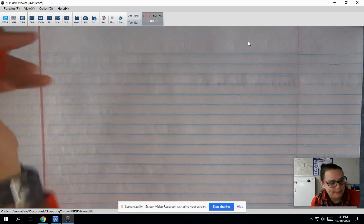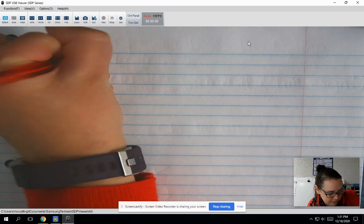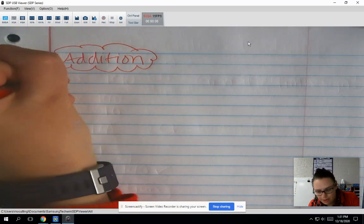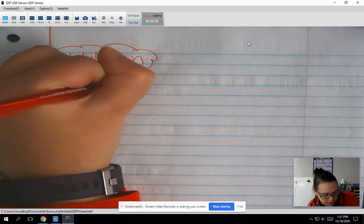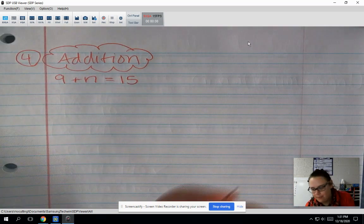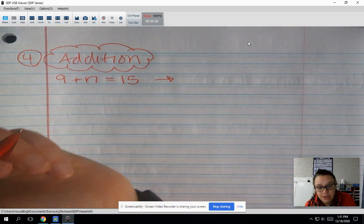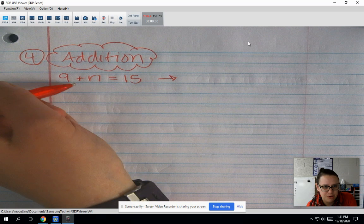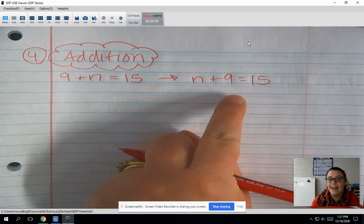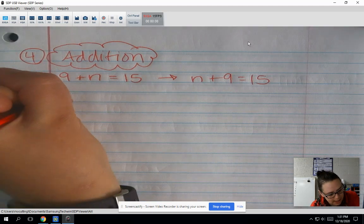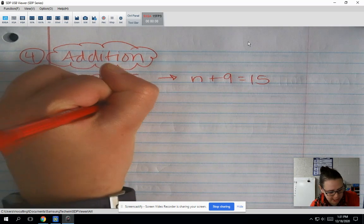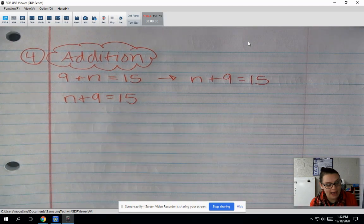Number 4 is addition. So our example is 9 plus n equals 15. So they took the mystery number n. They added 9 to it. They ended up with 15. Now, we know that with addition and multiplication too, we can switch the order. So I'm going to rewrite this as n plus 9 equals 15, because then it's easier to see I started with n, I added 9, I got 15. So this doesn't really matter. It's just a little easier to read it that way. So n plus 9 equals 15. So they added.